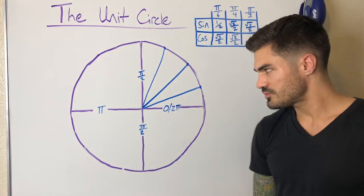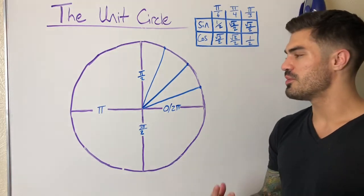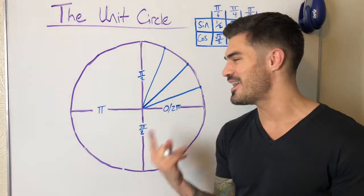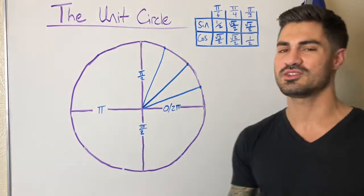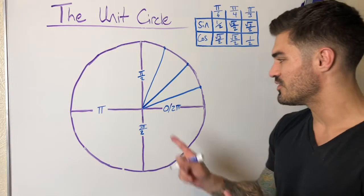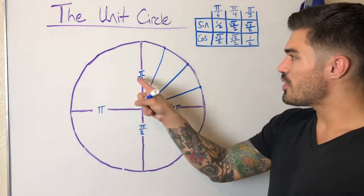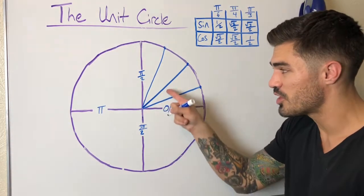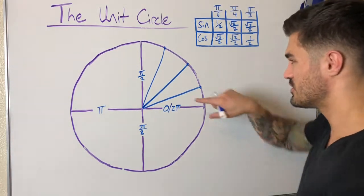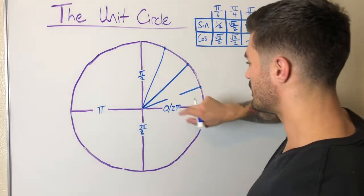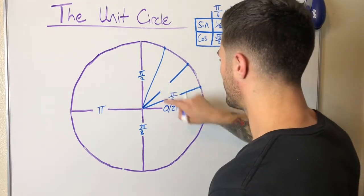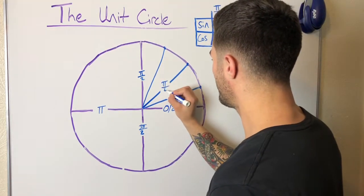What are these angles? We have 30, 45, and 60 degree angles in the first quadrant, so we can convert degrees to radians. Halfway between zero and pi over two is pi over four. In general, we remember that these are pi over six, pi over four, and pi over three — so pi over six, pi over four, pi over three.